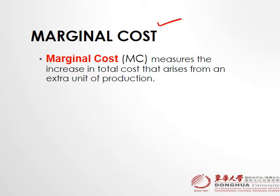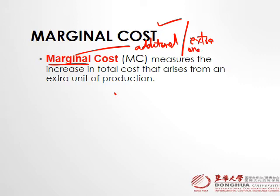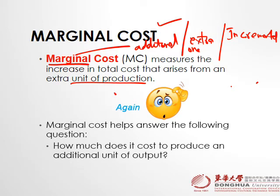Now here is the real deal — what is marginal cost? Marginal means additional, extra, or incremental. Marginal cost measures the increase in total cost that arises from an extra unit of production. In other words, what is the extra cost of producing one more unit? The question we answer is: how much does it cost to produce an additional unit of output? That additional cost of producing one more unit is called marginal cost.